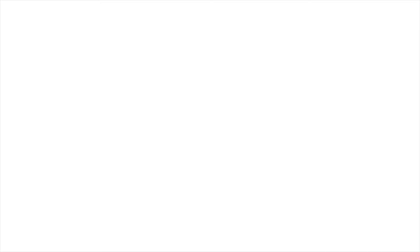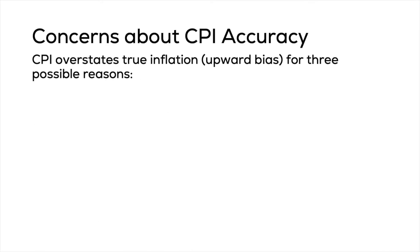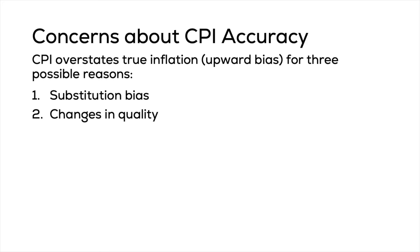Let us start with the concern that CPI might not be an accurate measure of the cost of living. CPI can overestimate the true level of inflation in three ways: the substitution bias, changes in quality bias, and new product and location bias.